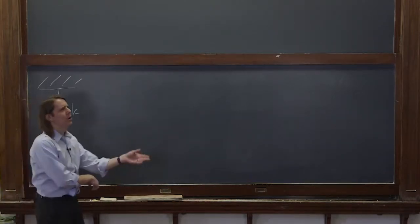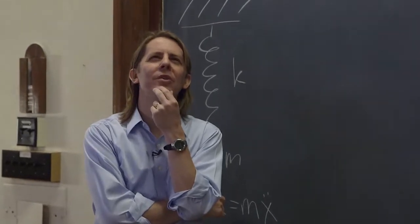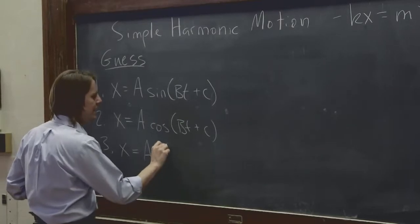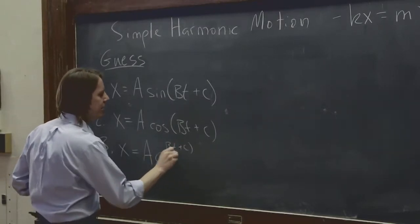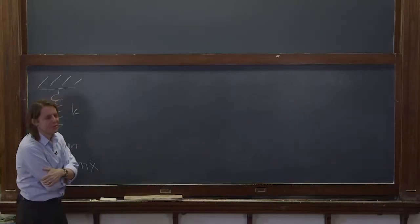I seem to recall that we sort of almost did this earlier in the class. We could write a nice general exponential function, ae to the bt plus c. And that would also follow the rule. Yes, it was one of our guesses, wasn't it? But we didn't check it.